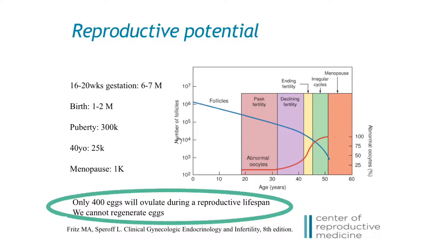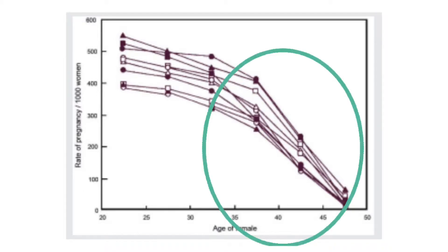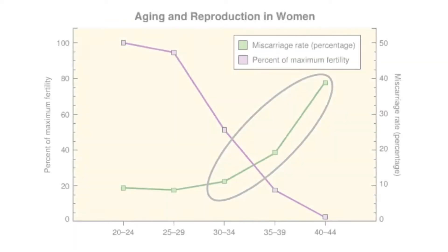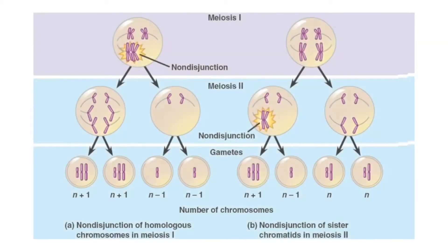We cannot regenerate eggs, so once the pool of remaining eggs is depleted, we are not able to increase our remaining egg supply. This graph shows pregnancy rates in various populations at different times in history. Fertility declines with age, and the effects of age are more pronounced in the woman than in the man. For women, there is a significant decrease in pregnancy rates around the age of 35. As women get older, there is a decline in pregnancy rates and an increase in miscarriage rates, due to an increasing proportion of genetically abnormal eggs.